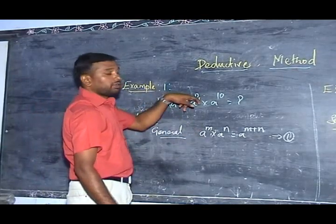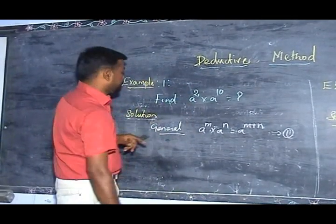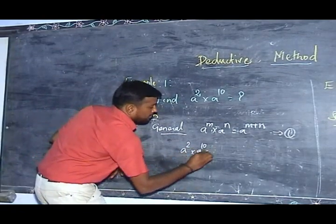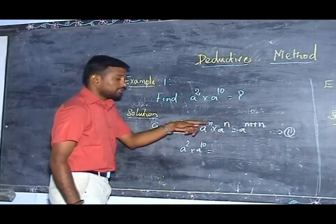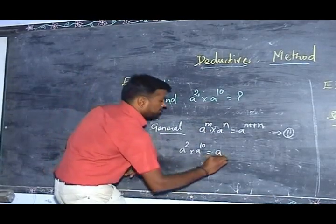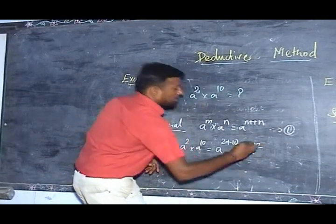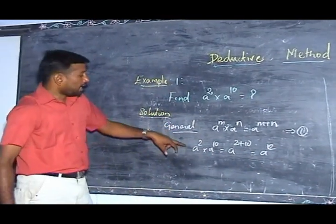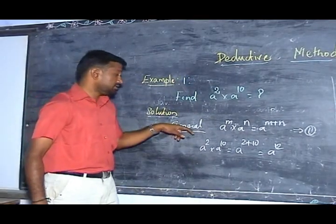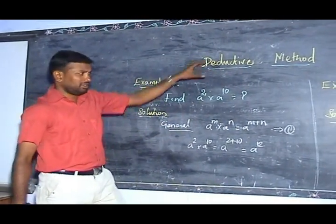Then we apply the formula to this particular example. Therefore, a² × a¹⁰: here m = 2, n = 10. Therefore, a² × a¹⁰ = a²⁺¹⁰ = a¹². Therefore, I solved the particular example using the general concept — that is why it is called the detective method.